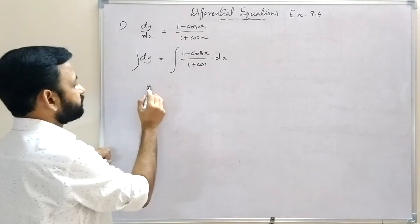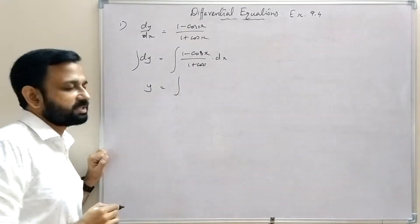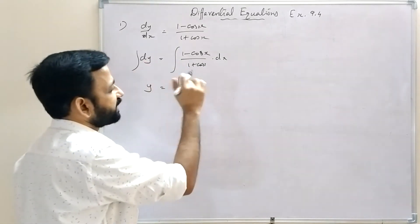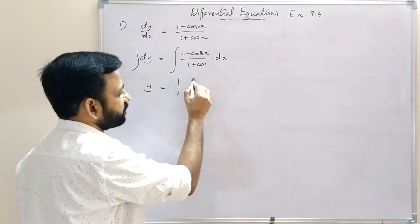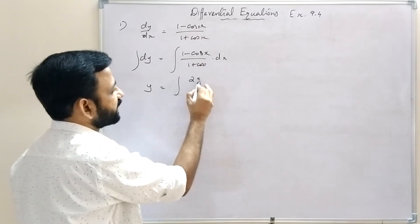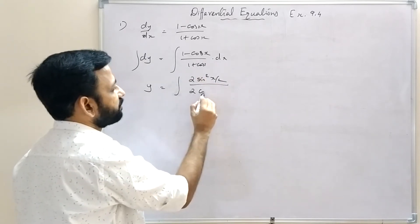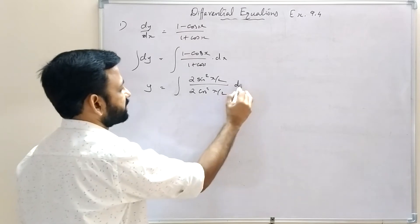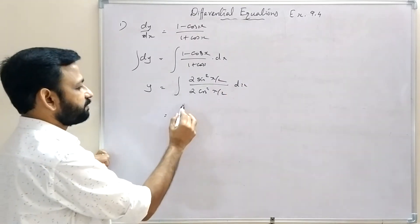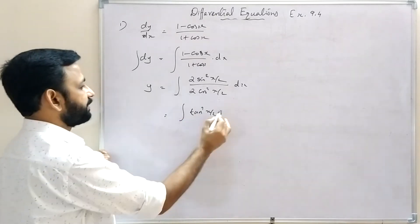Using the identities 1 - cos x = 2sin²(x/2) and 1 + cos x = 2cos²(x/2), the expression simplifies to sin²(x/2)/cos²(x/2) = tan²(x/2). So integral dy = integral tan²(x/2) dx.